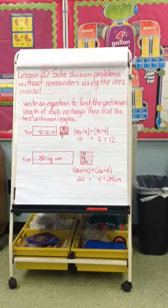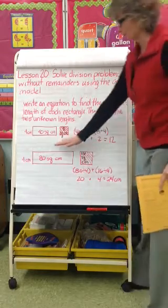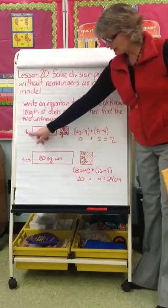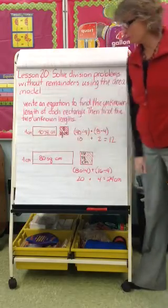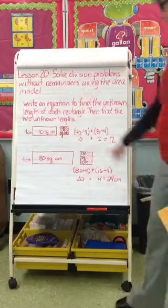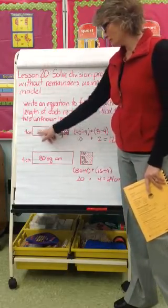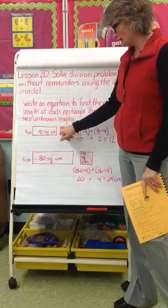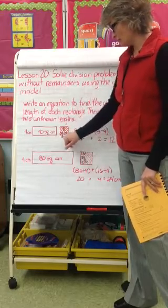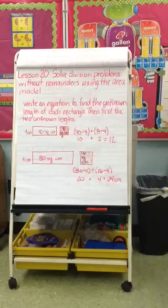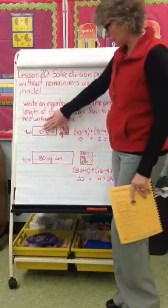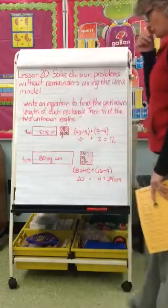Okay, let's look at the first problem I have up here. I know the length of one side of this rectangle is 4. I know the area is 40 square centimeters, and I know that the area of this is 8. If we were to put this together, the area would be 48.